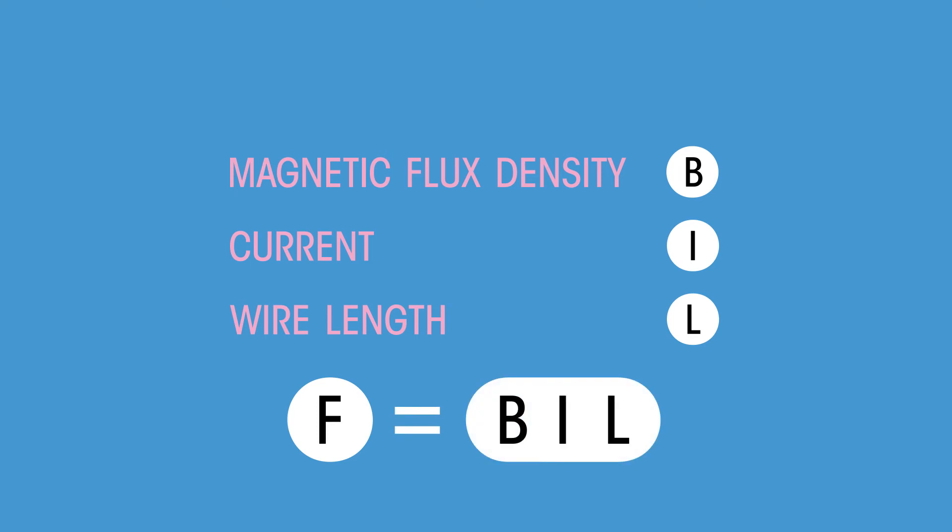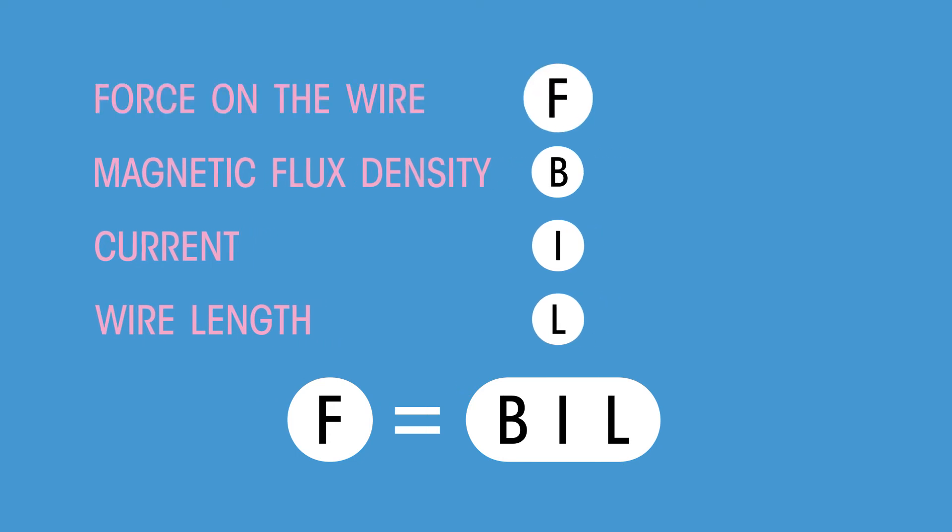This portion of wire shows the part of the wire that experiences the force. So now we have a link between magnetic flux density B, current I, and wire length L: F equals BIL. That was easy, wasn't it?